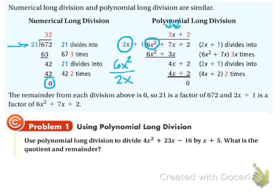Now I'm going to take that 3x and multiply it. When I multiply it, I'm going to multiply it times both the 2x and the 1 — I'm going to distribute. So 3x times 2x is 6x squared, and 3x times positive 1 is positive 3x. When you do this, you are subtracting this whole thing. So 6x squared minus 6x squared, those cancel. 7x minus 3x is 4x.